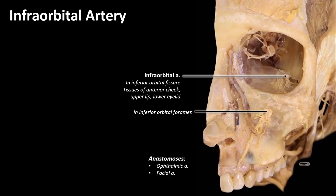The infraorbital artery will exit the pterygopalatine fossa through the inferior orbital fissure, bringing it up into the orbit, and then it will enter into the maxilla and eventually emerge out onto the midface through the infraorbital foramen. In the orbit, it will have some anastomosis with the ophthalmic artery, and on the face it will have some anastomosis with the facial artery. All in all, this will end up supplying the tissues of the anterior cheek, the upper lip, and the lower eyelid.